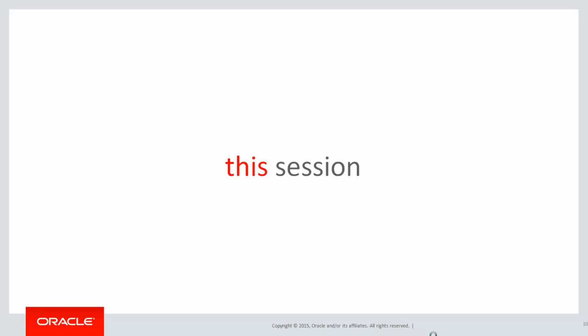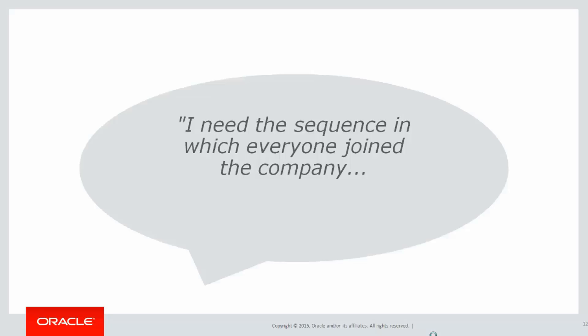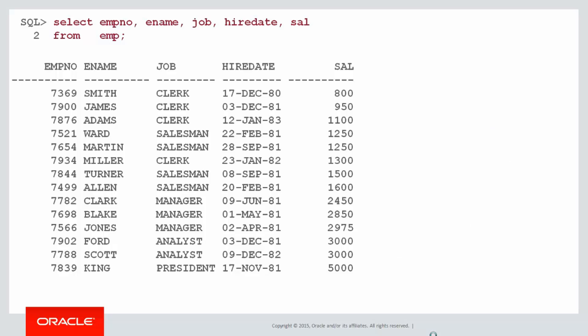This session we're going to solve the problem of ranking rows. This is the kind of thing that happens: someone phones up, typically your boss, and says, 'I have the following requirement — I need the sequence in which everyone joined the company. And I need it ASAP.' So let's look at some sample data. Here's a query of my employees table. There are 14 rows. Using the hire date — i.e. when they joined the company — we want to build a new column called the hire sequence, and that value is based on when they joined the company.